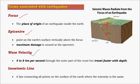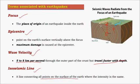Earthquake waves travel at speeds of 5 to 8 km per second in the earth's crust, that is the upper part of the earth. They travel much faster with depth as density increases. An iso-seismic line is a line joining all points where the intensity of an earthquake is similar.